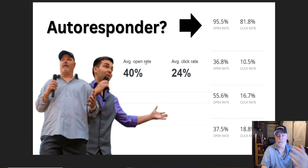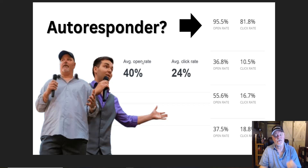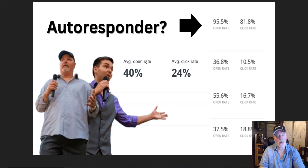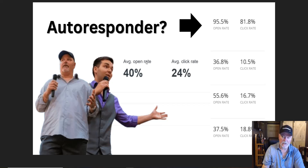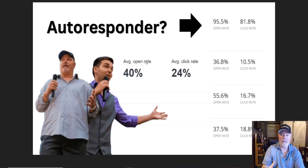You only broadcast to the openers and clickers. After 30 days, move them into another list — that becomes your broadcast list. These are the people you continue to follow up with because they're engaged with you. You never broadcast to people going through your 30-day email sequence. That intro sequence is for sorting, and if they never open or click, delete them. That is what sets you up for email marketing success and makes you a lot more money.